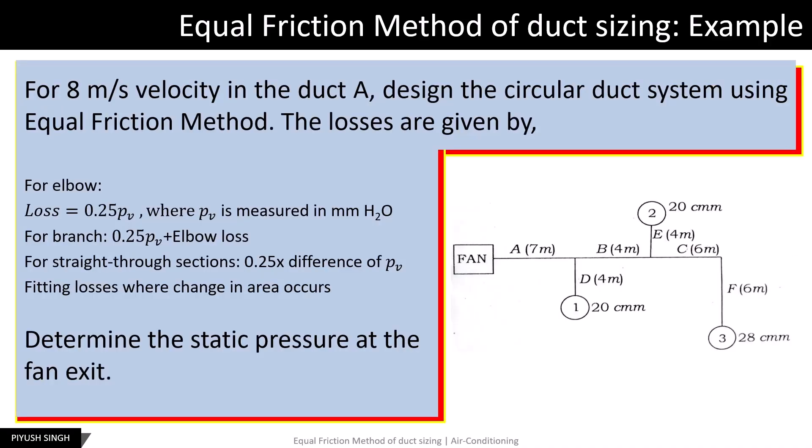Now, suppose that in addition to the frictional losses, the dynamic losses are also given — for example, elbow loss, branch loss, and straight-through section losses, also known as fitting losses — and we are asked to determine the static pressure at the fan exit. In this case, steps 1 to 5 remain the same. After compiling the table, we proceed to determine the dynamic losses and static pressure at the fan exit.